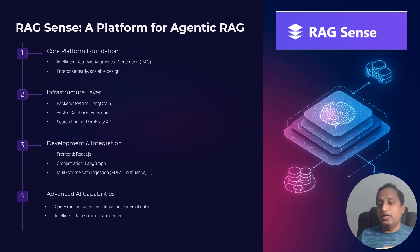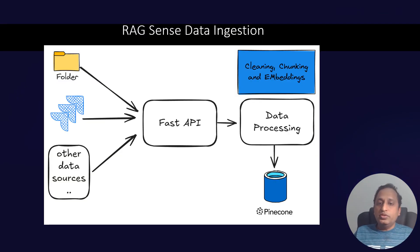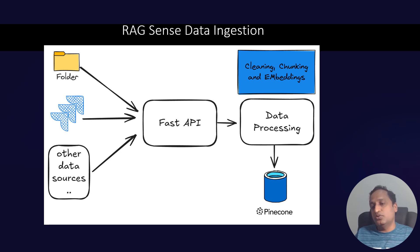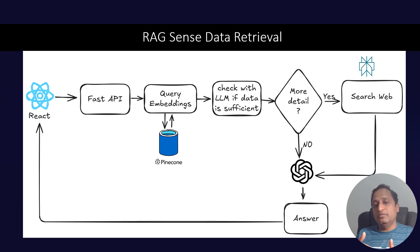This is the architecture of RAGSense. On the data ingestion side there are two data connectors: a local file system and Confluence pages. Additional sources can be added easily through a plug-and-play interface. Whenever there is a change in a source system — such as a new file or a new Confluence page — the connector invokes a FastAPI endpoint that runs the data through a processing pipeline: cleaning, chunking, and embedding, then storing data in Pinecone.